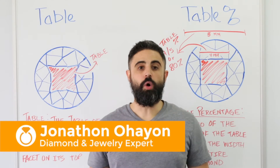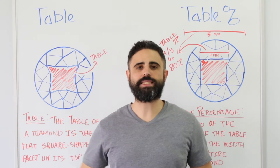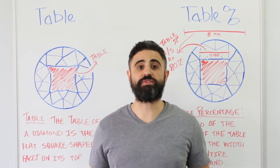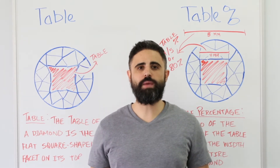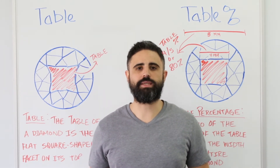Firstly, what is diamond table? The table of the diamond is a flat, square-shaped facet on the top of the stone. The table is the diamond's largest facet.